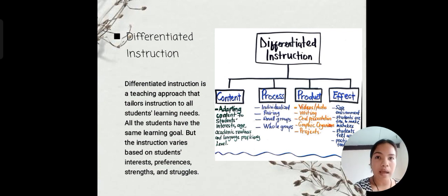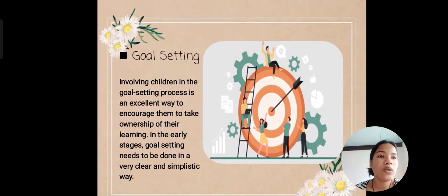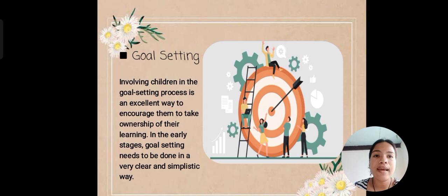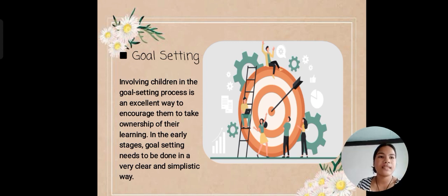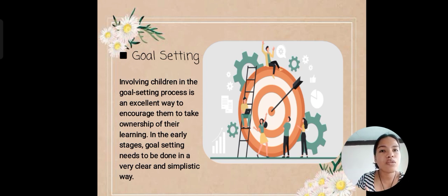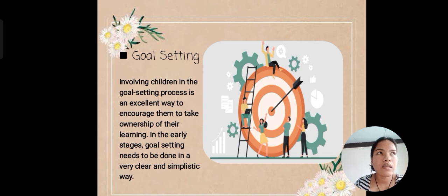The next strategy is goal setting. Involving children in the goal setting process is an excellent way to encourage them to take ownership of their learning. In the early stages, goal setting needs to be done in a very clear and simplistic way. This is a great strategy to use because it sets the mindset of the children that they need to learn a lot.